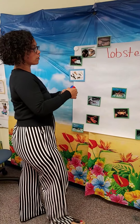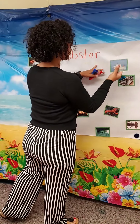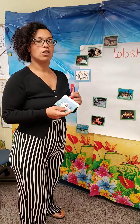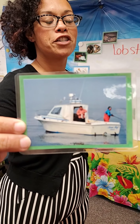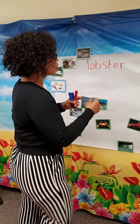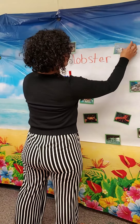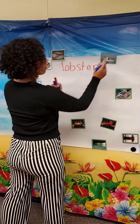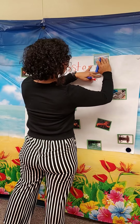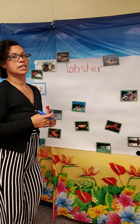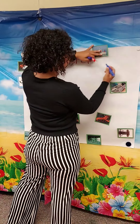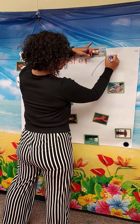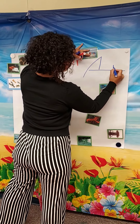The first thing we're going to learn about the lobster is who catches the lobster in the ocean. The fishermen catch the lobster in the ocean and they use a fishing boat to go out into the ocean and catch lobsters. The fishermen are actually considered a predator for the lobsters because people eat lobster.